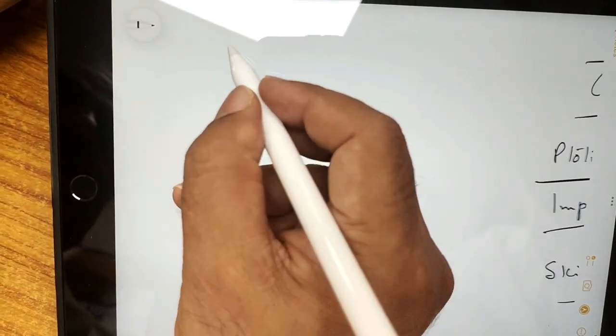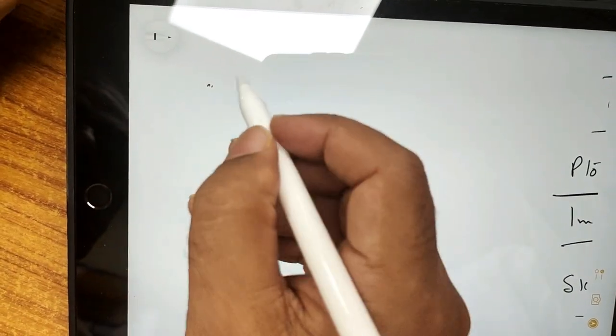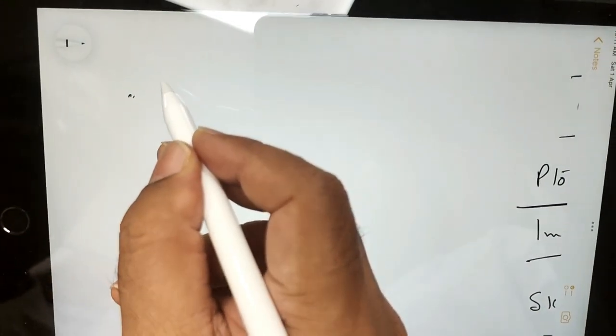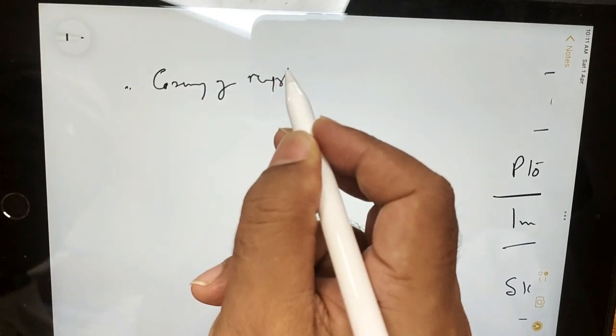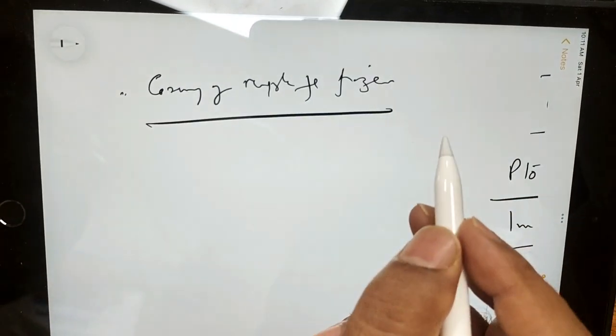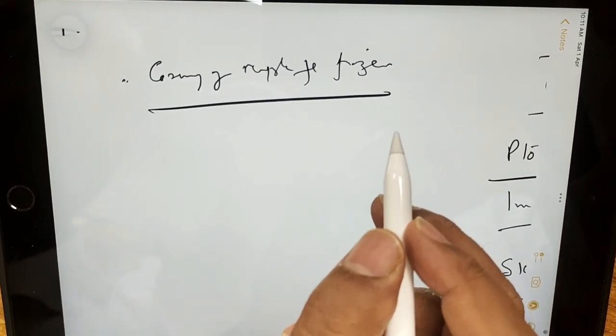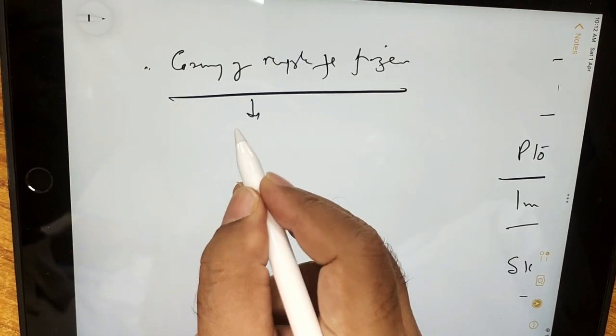But what did we observe when we were doing skin sparing? We found, we had sent the coring of nipple for frozen. You must have seen that, you saw the procedure?